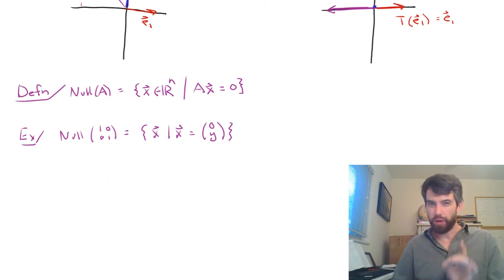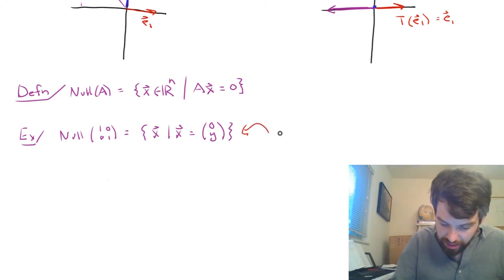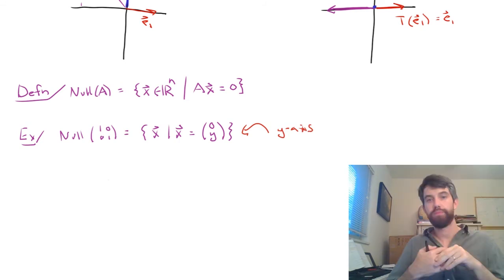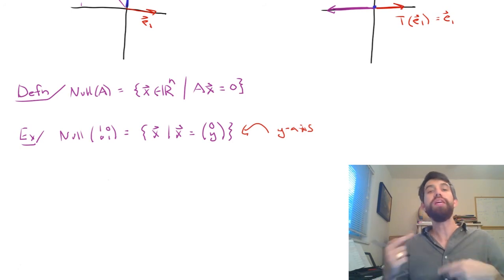Nonetheless, a more convenient way of writing it down is just to say that this is going to be the Y axis. Now let's investigate the column space.